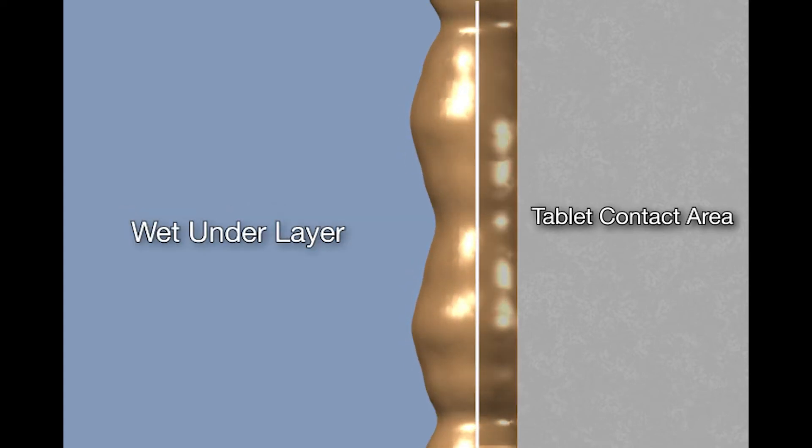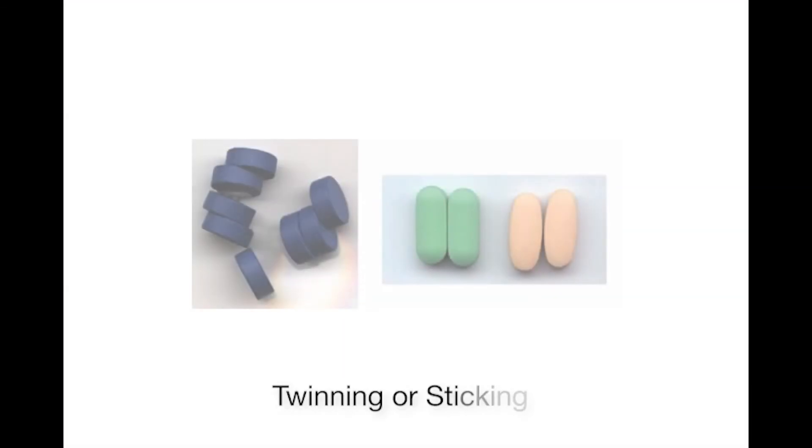Conversely, if evaporation is too slow, the surface layer will dry, leaving a wetter layer underneath causing twinning or sticking.